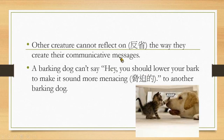Other creatures cannot reflect on the way they create their communicative messages. For example, a barking dog cannot say 'Hey, you should lower your bark to make it sound more menacing' to another barking dog. However, human beings can make different kinds of sounds.